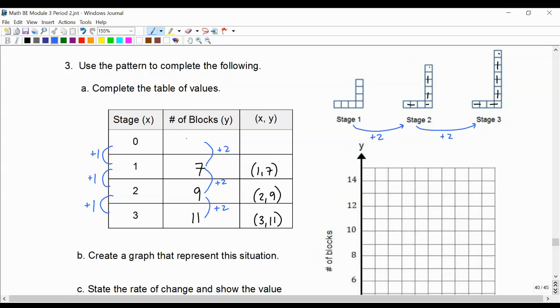And that means that we need a number for stage 0 that when I add 2 gets me to 7. That number is 5.